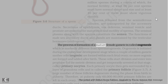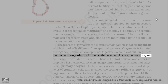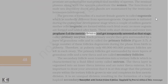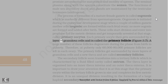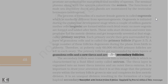The process of formation of a mature female gamete is called oogenesis, which is markedly different from spermatogenesis. Oogenesis is initiated during the embryonic development stage when a couple of million gamete mother cells (oogonia) are formed within each fetal ovary. No more oogonia are formed and added after birth. These cells start division and enter into prophase of the meiotic division and get temporarily arrested at that stage, called primary oocytes. Each primary oocyte then gets surrounded by a layer of granulosa cells and is called the primary follicle. A large number of these follicles degenerate during the phase from birth to puberty, so at puberty only 60,000 to 80,000 primary follicles are left in each ovary. The primary follicles get surrounded by more layers of granulosa cells and a new theca and are called secondary follicles.